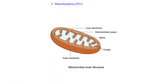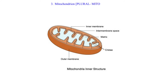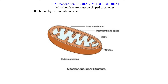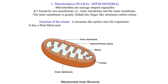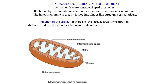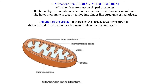Mitochondrion — plural mitochondria. Mitochondria are sausage-shaped organelles. They are bound by two membranes: the inner membrane and the outer membrane. The inner membrane is greatly folded into finger-like structures called cristae. The cristae increase the surface area for respiration. The mitochondrion has a fluid-filled medium called the matrix where respiratory reactions take place.